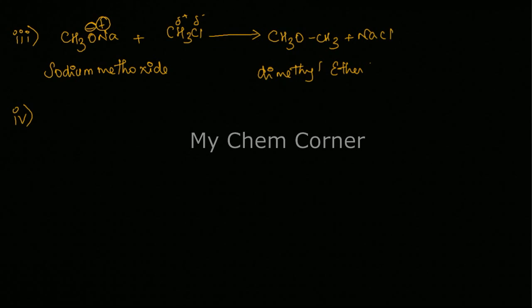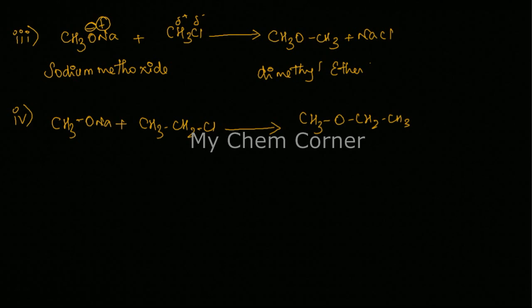So unsymmetrical ether basically means on one side of the ether you need to have a CH3, on the other side of the ether you need to have a different alkyl group. That is what an unsymmetrical ether means. This can be easily prepared by the same Williamson's ether synthesis method. You can take same CH3-O-Na plus I can change the alkyl halide to CH3-CH2-Cl. When this reacts, this part of the ethyl group will bond to the oxygen to give you on one side an ethyl group, on the other side a methyl group. So you have unsymmetrical ether here.